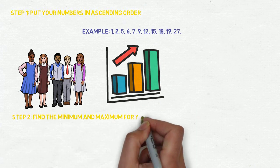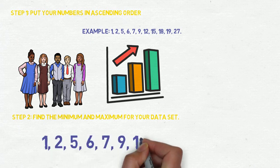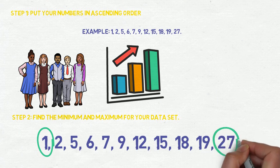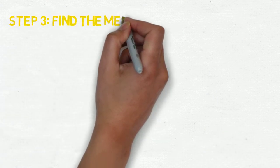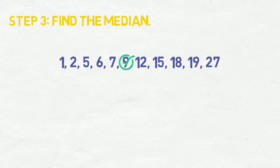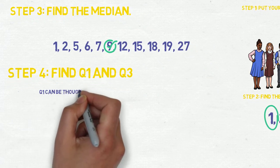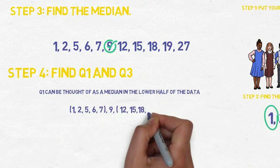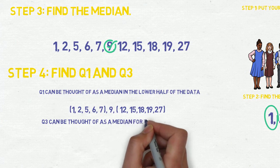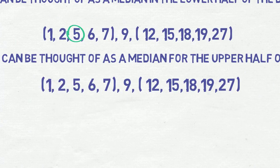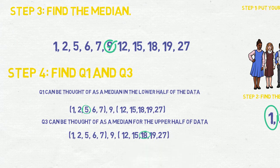Step 3: Find the median. The median is the middle number, so in our example the median is 9. Step 4: Find Q1 and Q3. Q1 can be thought of as the median in the lower half of the data, and Q3 can be thought of as the median for the upper half of the data. So in our case, Q1 is 5 and Q3 is 18.